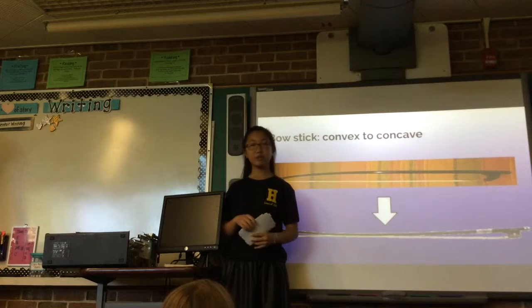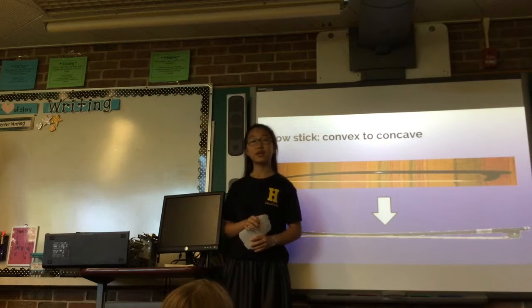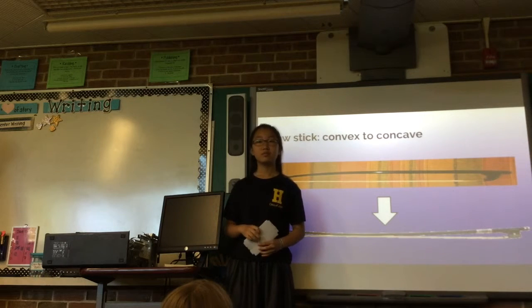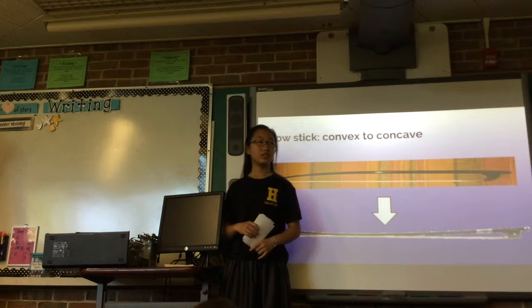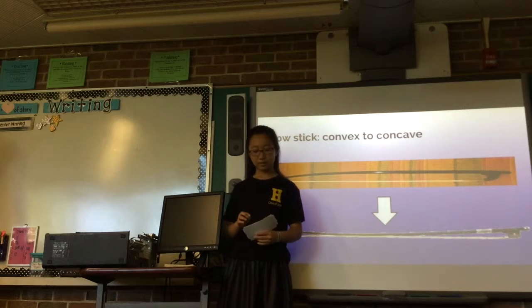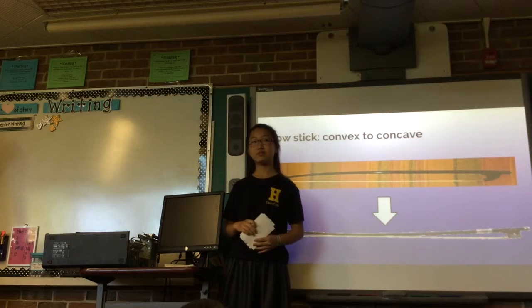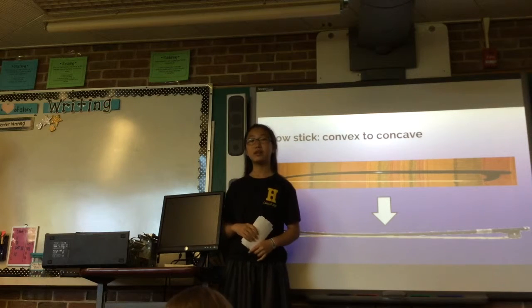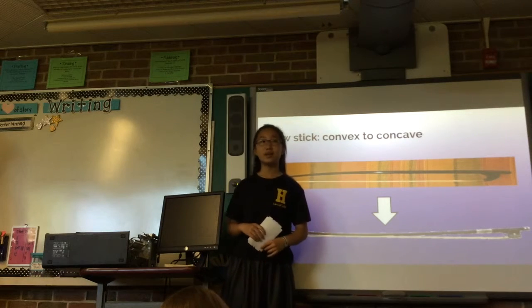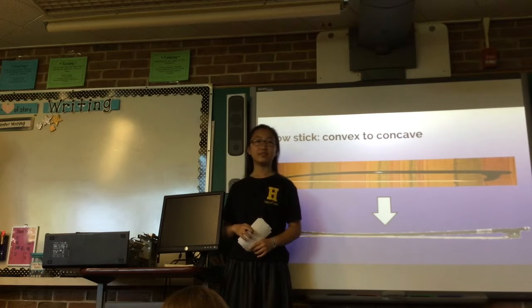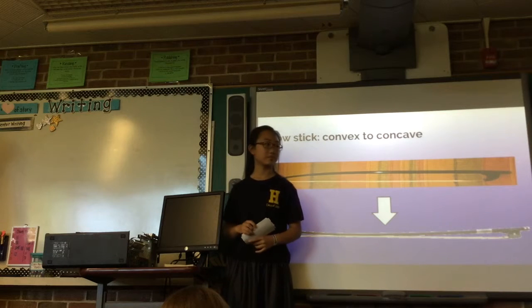A Baroque bow stick is convex and looks like a hunting bow, while the modern bow is concave. This change was made because a concave stick responded better to pressure from fingers and wrists and made different kinds of articulation possible.